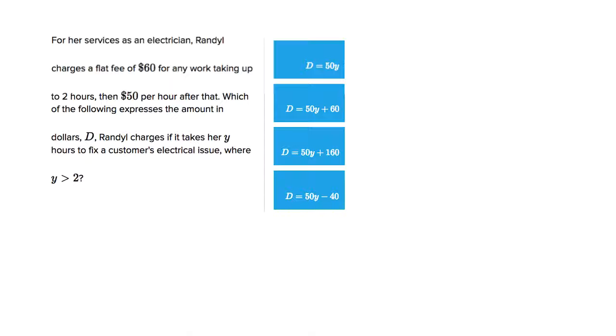So in this scenario we have an electrician who charges a flat fee of $60 for work taking up to two hours, then $50 per hour after that. Which of the following expresses the amount in dollars D that Randall charges if it takes her Y hours to fix a customer's electrical issue where Y is greater than two?